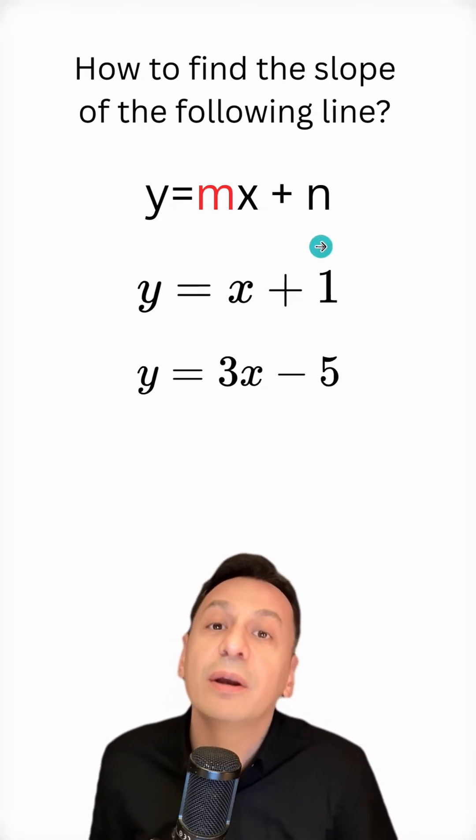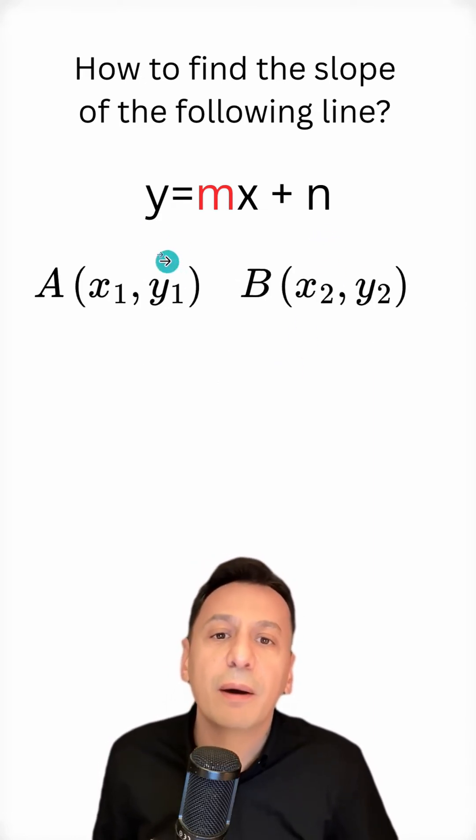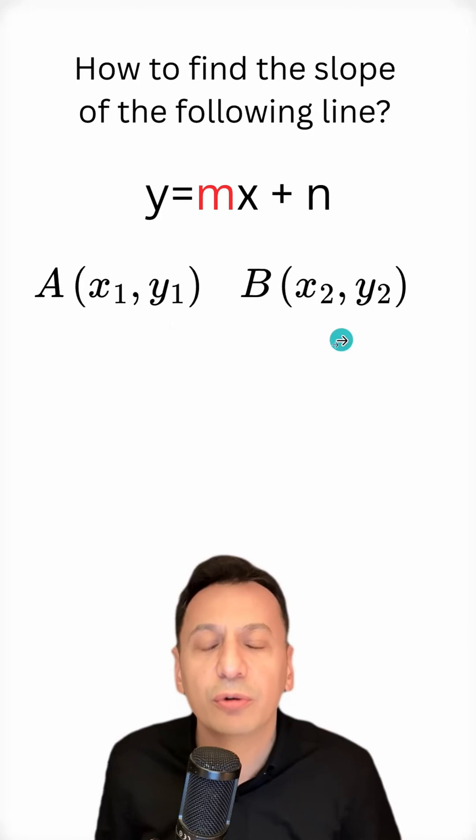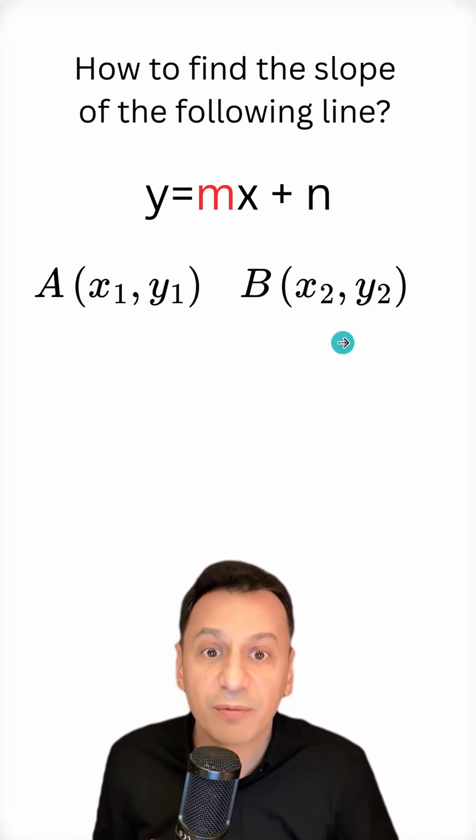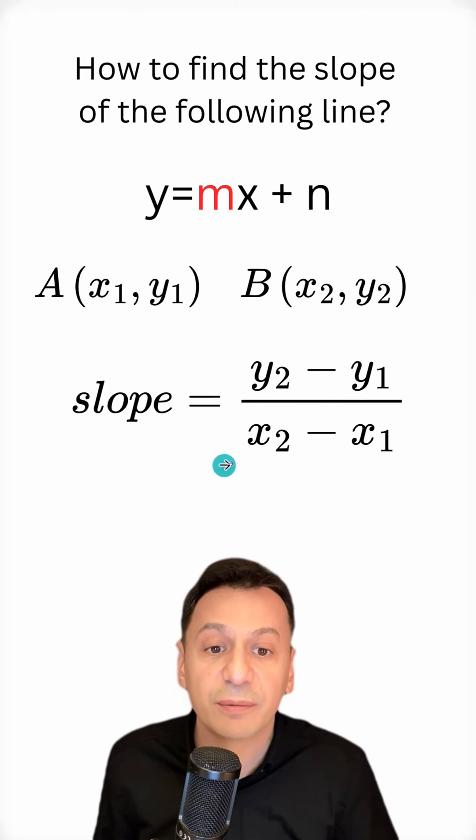Now let's go ahead and calculate the slope of the line here. First, how am I going to calculate it? I need to choose two points on it. After choosing these two points, I will divide the difference in the verticals by the difference in the horizontals. Let's begin.